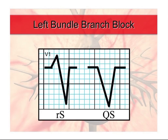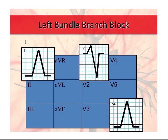In V1, we get morphologies where the terminal wave is negative with a left bundle branch block. And with a left bundle branch block, in lead 1 and V6 you should see a big monophasic R wave — you might have a little bit of a negative deflection, but for the most part just a monophasic R wave. And in V1, the terminal negative wave.